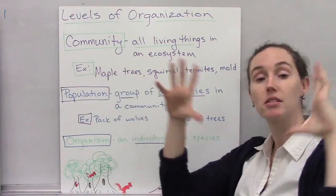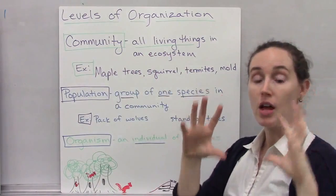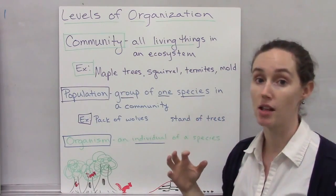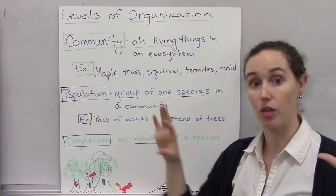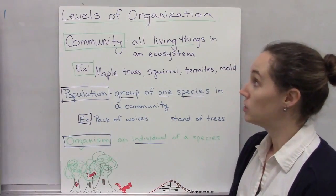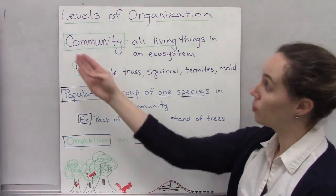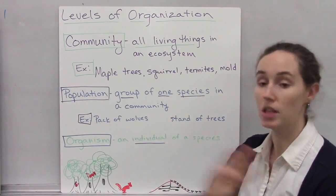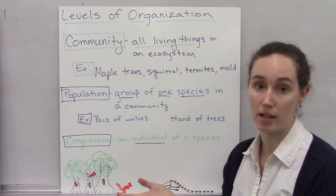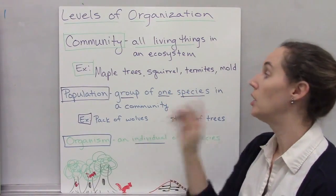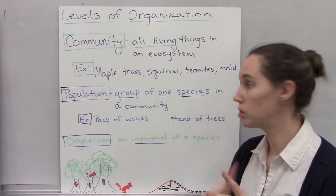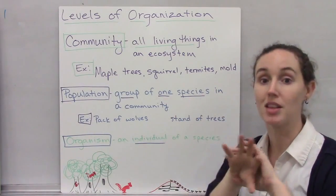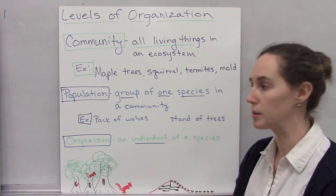As we continue to get smaller, we focus just on the living things and not on environmental factors. We have the community, which is all of the living things in an ecosystem. For example: maple trees, squirrels, termites, and mold — all the living things in a woodland ecosystem.